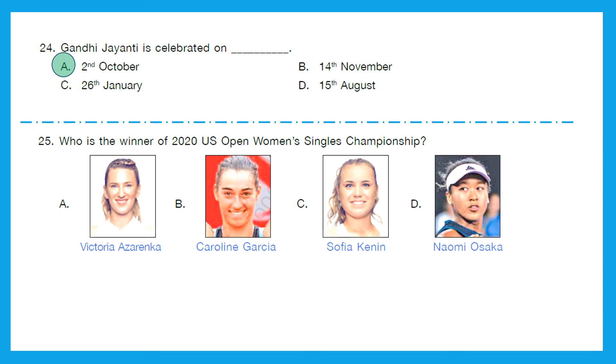Question 25: Who is the winner of 2020 US Open Women's Singles Championship? So, the right answer over here is option D, Naomi Osaka. Now, I am going to talk about 2021 winner, 2022 winner and 2023 winner also. So, in 2021, the winner was Emma. In 2022, the winner was Iga and in 2023, the winner was Coco. So, please do remember this.